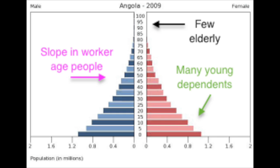At the bottom, there are many young dependents. At the top, few elderly — you don't live to be very old in countries like this. And in the middle, we have a very steep slope of the worker-age cohort. This means we have a lot of dependents and not a lot of workers to take care of them. There are a lot of children for every working person, and that's why we see a lot of poverty in countries like this.